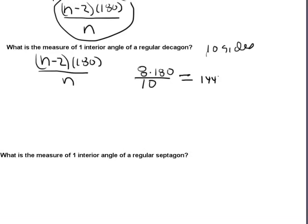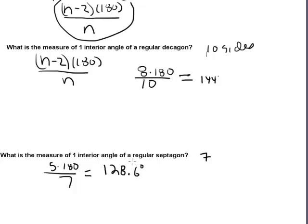How about the measure of one interior angle of a regular septagon? A septagon is a seven-sided shape. Using our formula: n minus two is five, times 180, divided by seven. Five times 180 divided by seven gives you a decimal — each angle is approximately 128.6 degrees in a regular septagon.